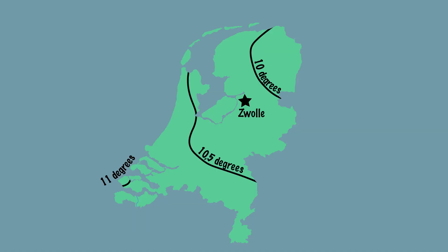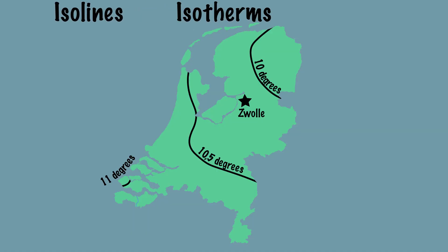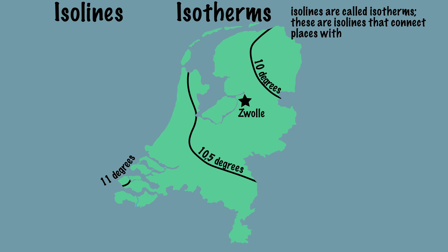The drawn ISO lines are called isotherms. These are ISO lines that connect places with the same temperature. The isotherms divide the Netherlands into four parts.